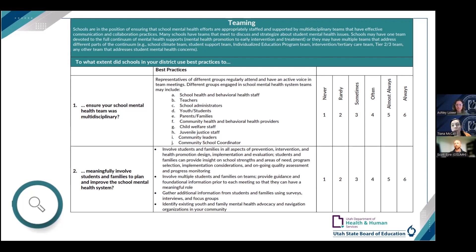You'll see that the beginning questions are focused on efforts done by schools in your district or LEA, and the remaining four are related to the district-level support provided for each domain. Example questions include the extent to which your schools meaningfully involve students and families to plan and improve the school mental health system, the extent to which teaming structures address each tier of the multi-tiered system of support, and the extent to which you delineate staff roles and responsibilities.